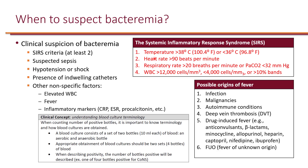The SIRS criteria include: a fever, defined as a temperature of 38 degrees centigrade or 100.4 degrees Fahrenheit, or hypothermia if the temperature is less than 36 degrees; heart rate over 90 beats per minute; respiratory rate over 20, or PaCO2 less than 32; and lastly, white blood cell count more than 12 — leukocytosis — or white blood cell count less than 4 — leukopenia.